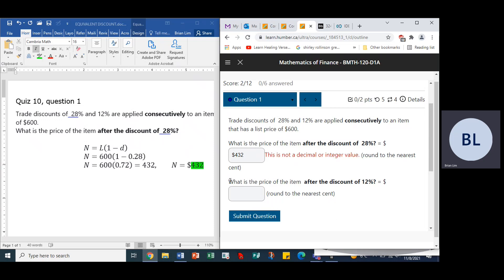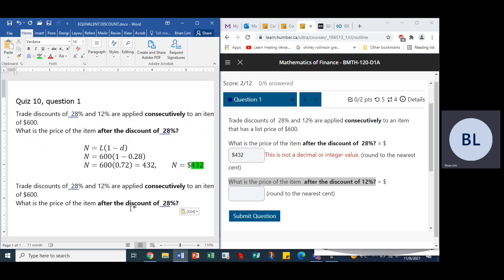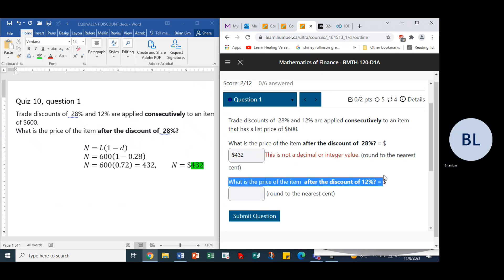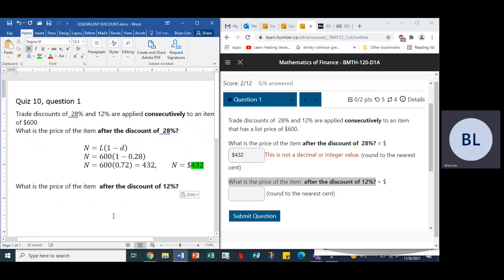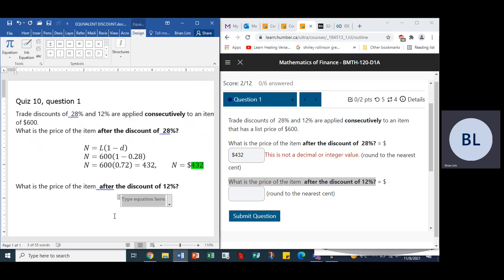What is the price of the item after the 12% discount? Let's go back. Let's copy and paste. The discount of 12% - now we are doing the same thing except the numbers will be different. We'll use the same equation N = L(1-d), but we will enter different numbers.